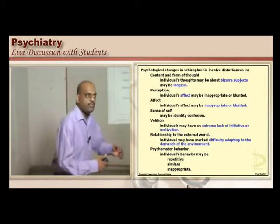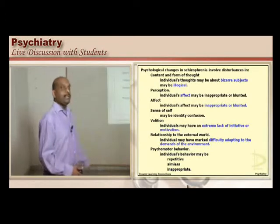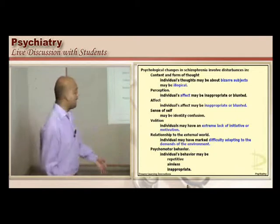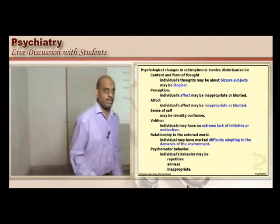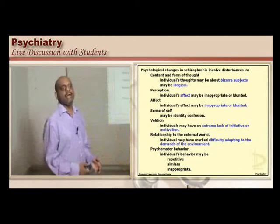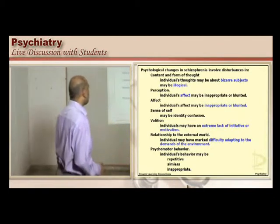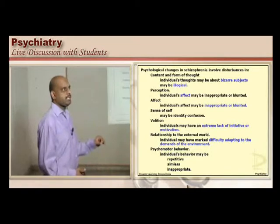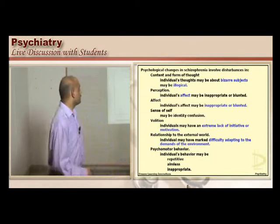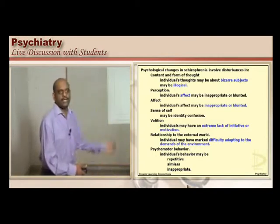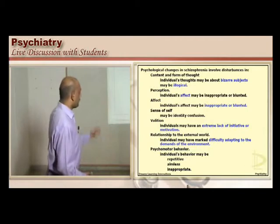There is an extreme lack of initiative, and volition is a major problem in schizophrenia. The relationship with the external world is also affected — the individual has great difficulty adapting to a demanding environment. Repetitive, aimless, inappropriate, and psychopathic activity constitutes the major psychopathology of schizophrenia.